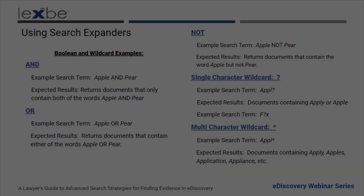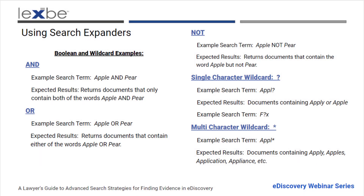We also can use some of that same knowledge to expand the search. Boolean and wildcards are a really good way to do that. The wildcards can be very helpful in making sure you're pulling in all of the different conjugations of a verb, for example.